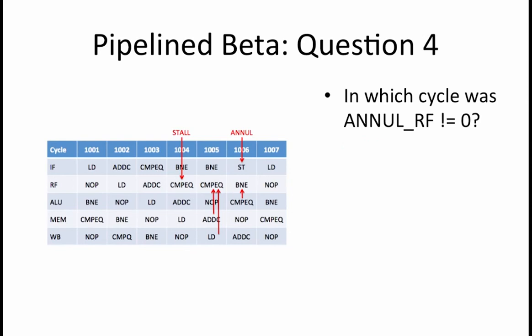In which cycle was null_RF not equal to 0? This question is asking when an annulment was initiated in the RF stage. This occurred when the compareEqual instruction needed to be stalled in the RF stage. In order to fill the pipeline bubbles, a NOOP is inserted into the pipeline in place of the compareEqual instruction that was in the RF stage in cycle 1004. The stall, and thus the setting of null_RF not equal to 0, occurs in cycle 1004.